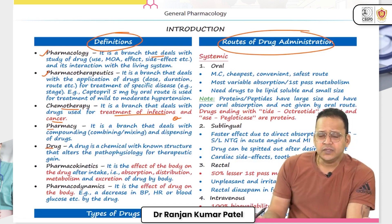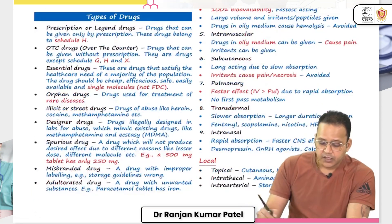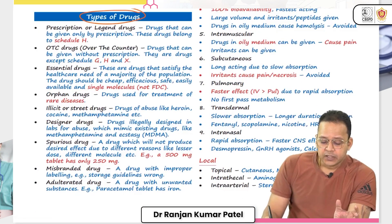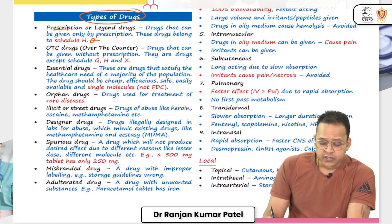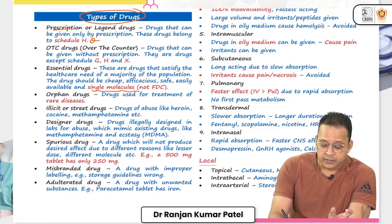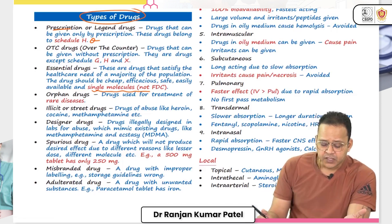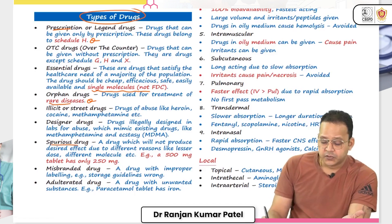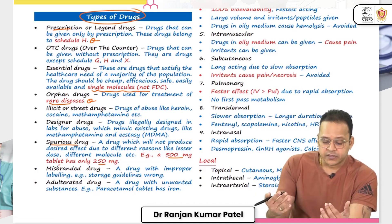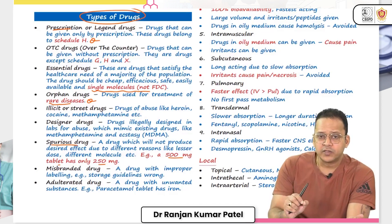For example, pharmacokinetics and pharmacodynamics have been asked. Under types of drugs, Schedule H is marked in red — that is what a prescription drug is. OTC drugs have never been asked. Essential drugs have been asked once — they are single molecules, not fixed dose combinations (FDC). Orphan drugs are drugs for rare diseases, marked in red. Spurious drugs — where a 500 mg tablet contains only 250 mg — are also marked in red.